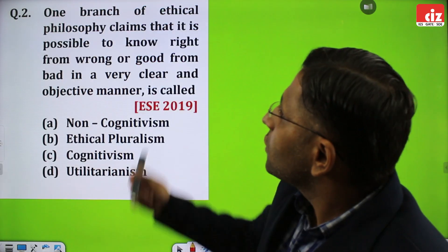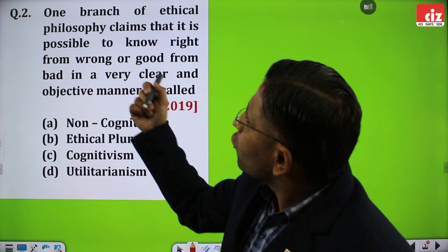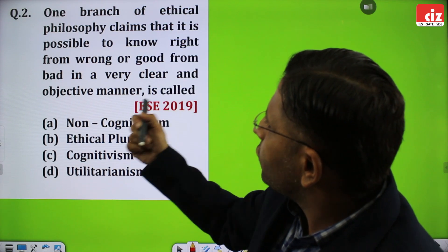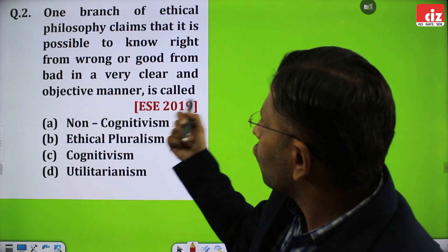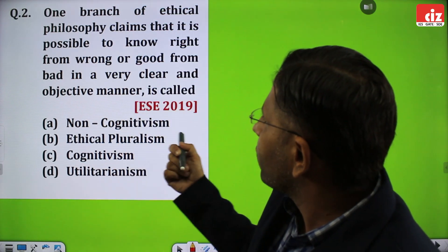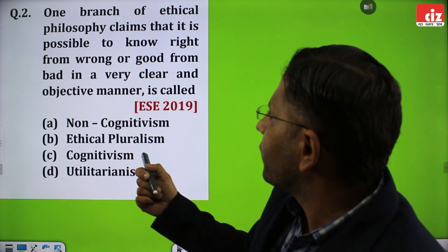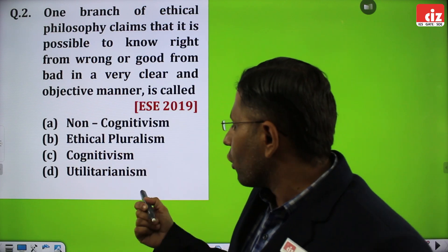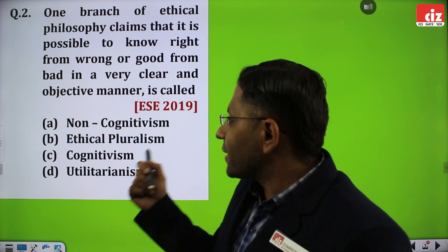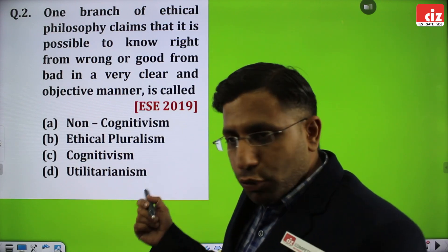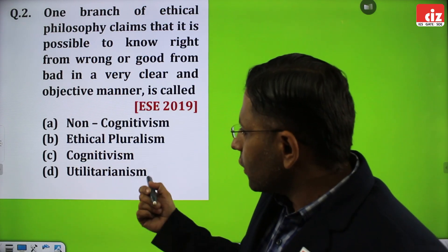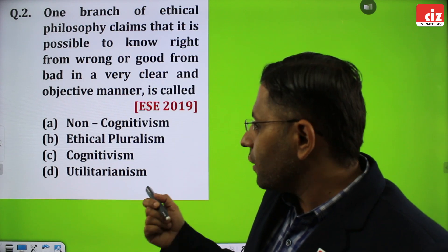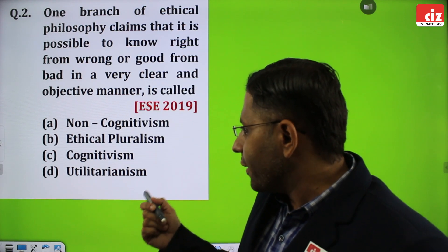The second question: one branch of ethical philosophy claims that it is possible to know right from wrong or good from bad in a very clear and objective manner. This is called — first is non-cognitivism, second is ethical pluralism, third is cognitivism, and the last one is utilitarianism.